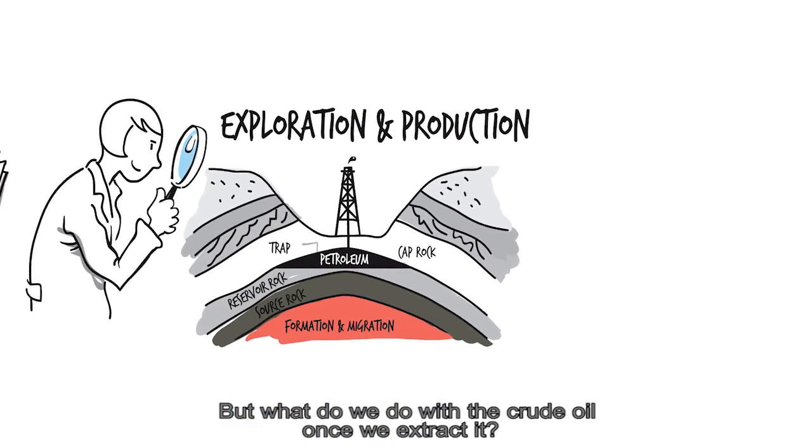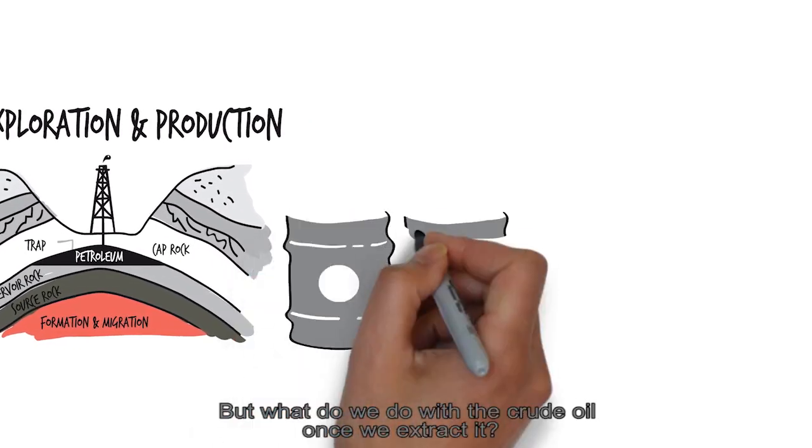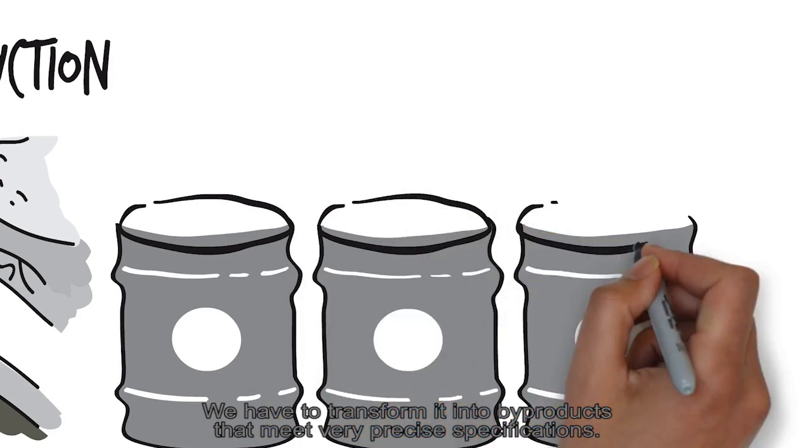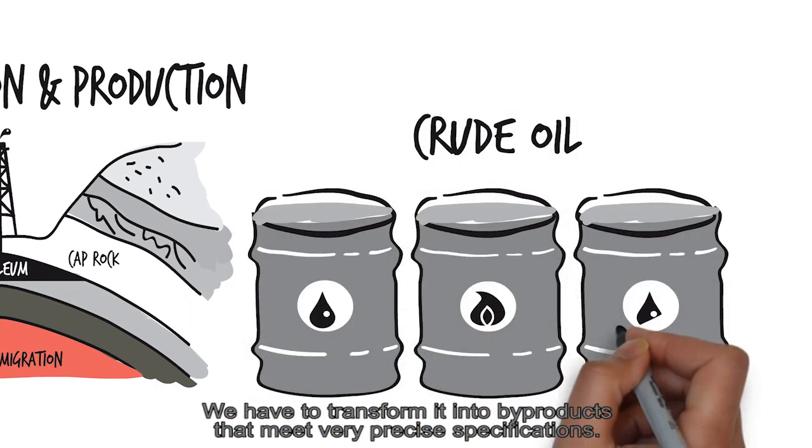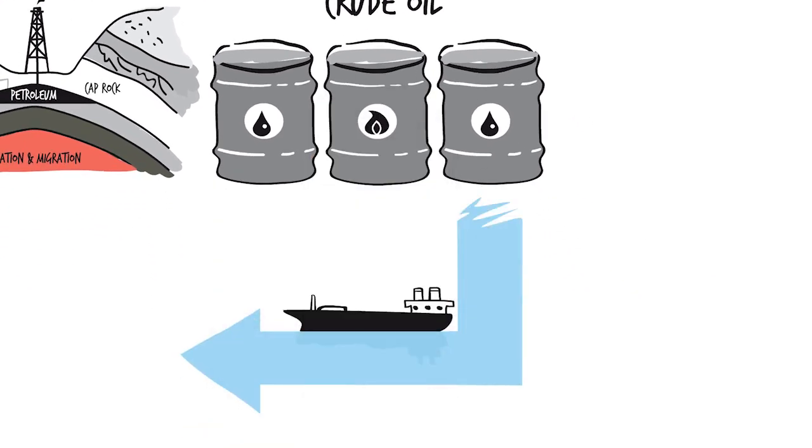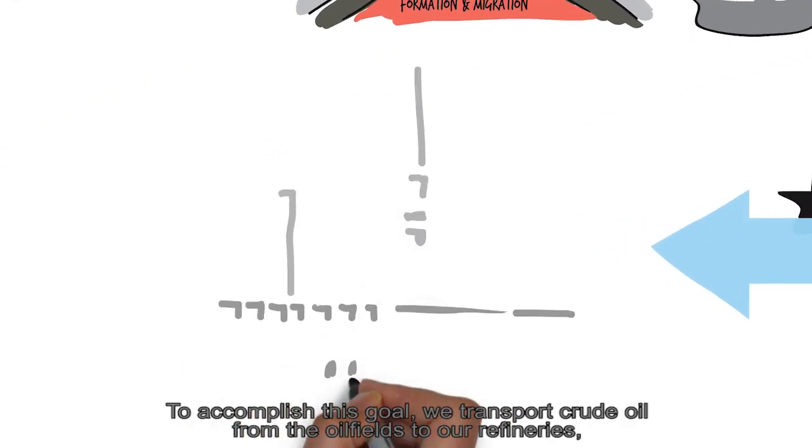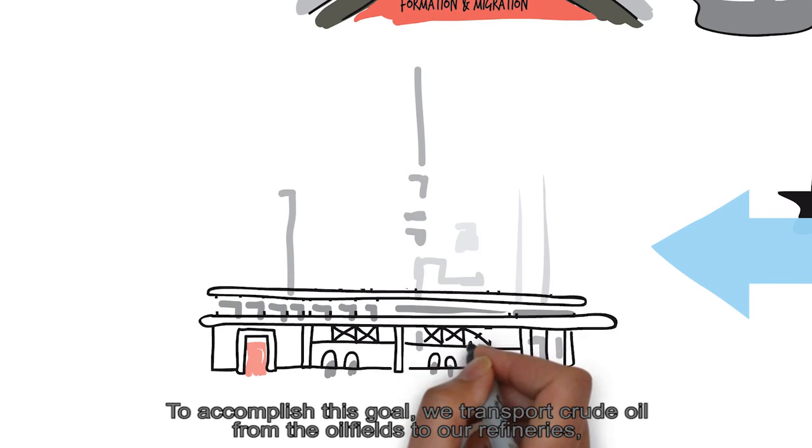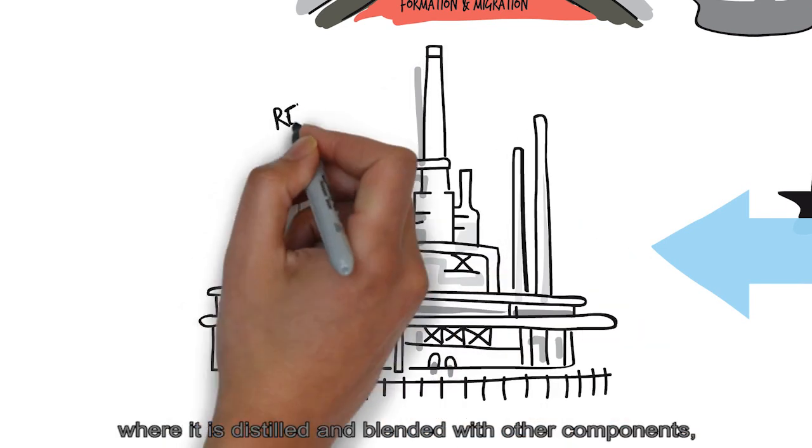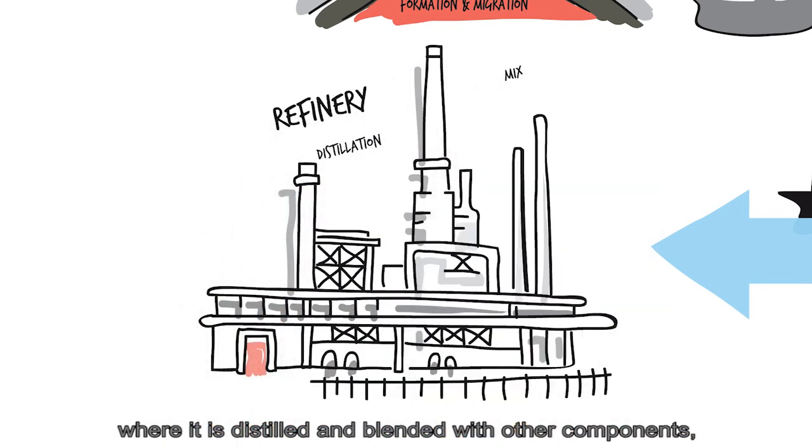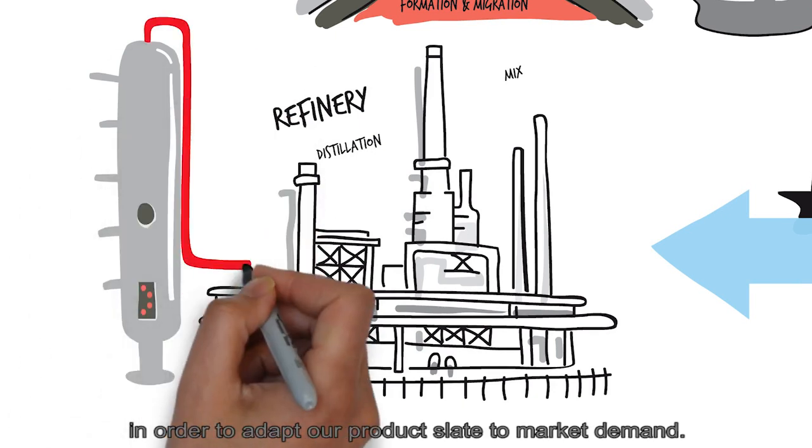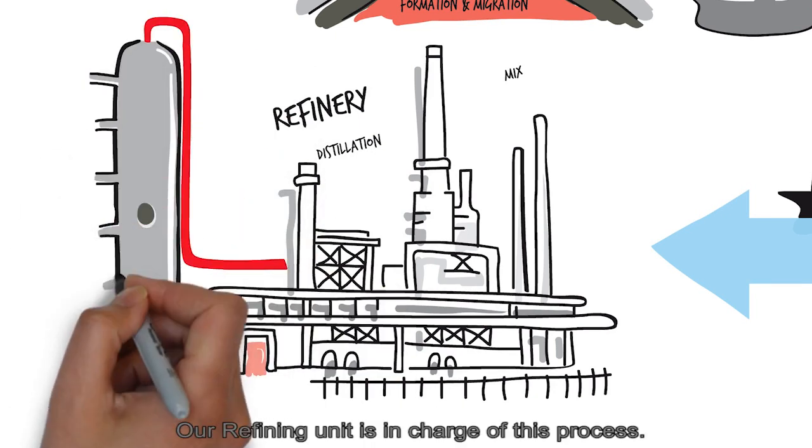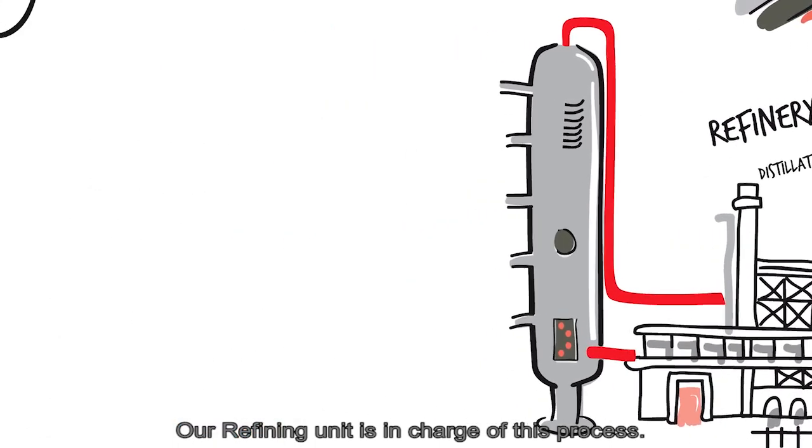But what do we do with the crude oil once we extract it? We have to transform it into by-products that meet very precise specifications. To accomplish this goal, we transport crude oil from the oil fields to our refineries, where it is distilled and blended with other components in order to adapt our product slate to market demand. Our Refining unit is in charge of this process.